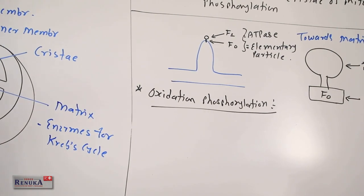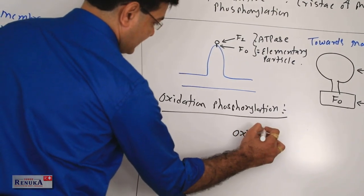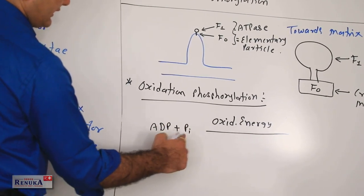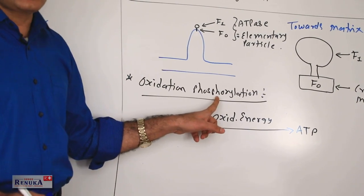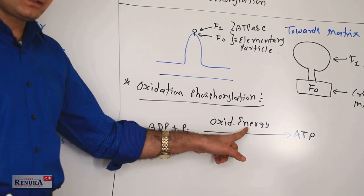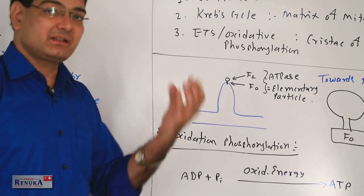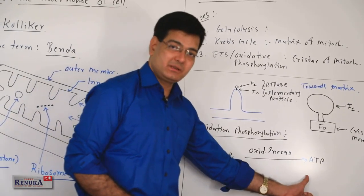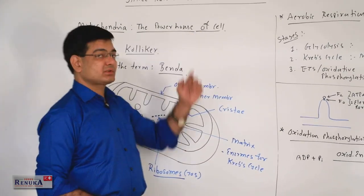Oxidative phosphorylation is the main process of ATP synthesis. With the help of oxidation energy, ADP is phosphorylated by inorganic phosphate to form ATP. The oxidation energy is obtained from electrons — when electrons move in the electron transport system they liberate energy, and with this energy ADP is phosphorylated to ATP. That is why mitochondria is called the powerhouse of the cell.